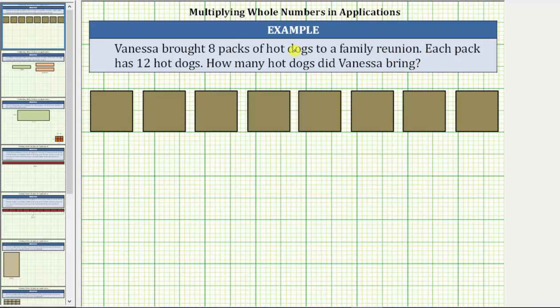We can model the situation by letting these eight rectangles represent the eight packages of hot dogs. And because each package contains 12 hot dogs, we can place a 12 in each rectangle, or each package of hot dogs.